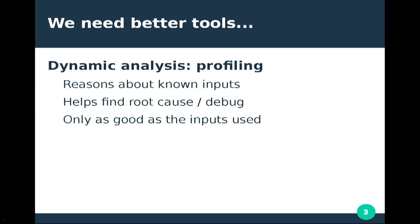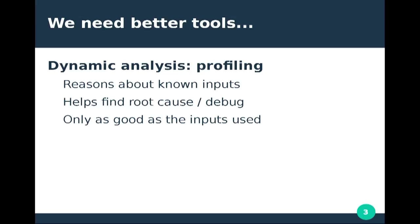Clearly we need better tools. Currently, what we commonly use is dynamic analysis known as profiling. We take known test case inputs, hopefully including inputs that lead to poor performance, and analyze exactly where cycles are being spent and which instructions are hotter. But this can only help if you already know the specific inputs — it helps find the root cause but cannot help you find the inputs that lead to bad performance. To find those, you need static analysis.